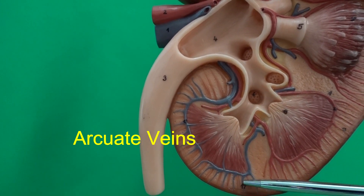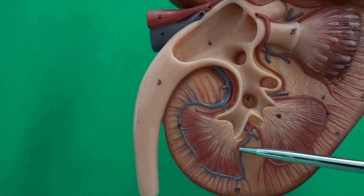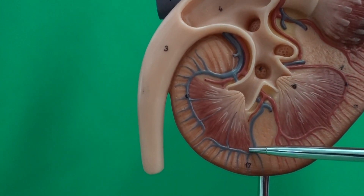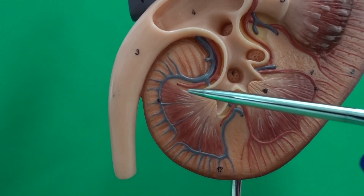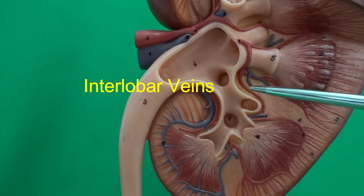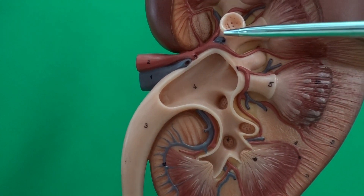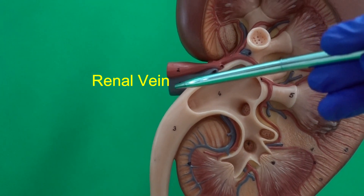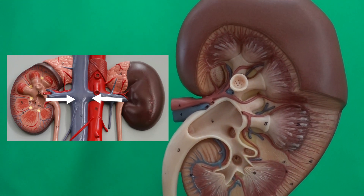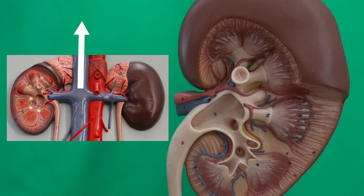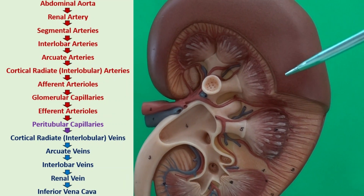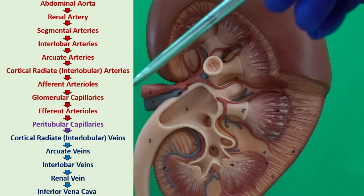From the arcuate veins, when we follow the blood, we see it goes into some blood vessels that extend through the renal columns. We name these veins that extend through the renal columns interlobar veins. When we follow the interlobar veins, we see that they drain blood into the renal vein, and the renal vein takes blood into the inferior vena cava, which sends this filtered, clean blood to the right atrium of the heart. That's how blood gets inside the kidney and eventually gets back out.